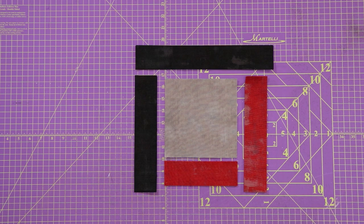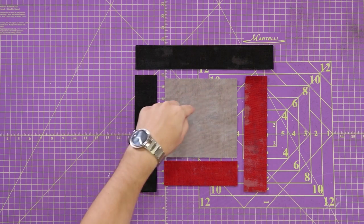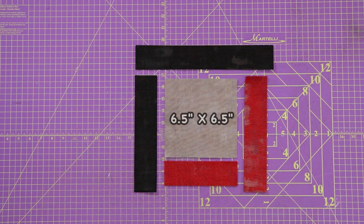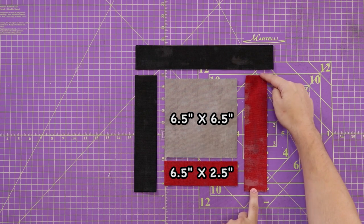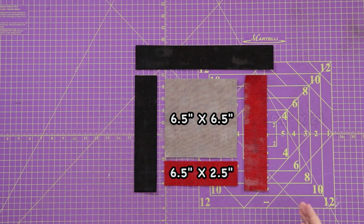As you see in front of me I've already gone ahead and pre-cut down my fabrics. Really easy cuts here. My center square is six and a half by six and a half square. My small red piece is six and a half by two and a half. My long red piece is nine and a half by two.